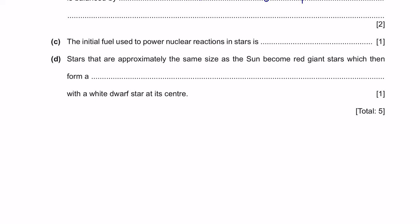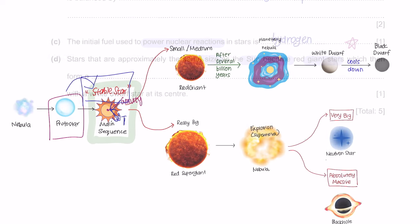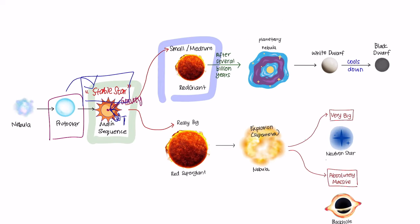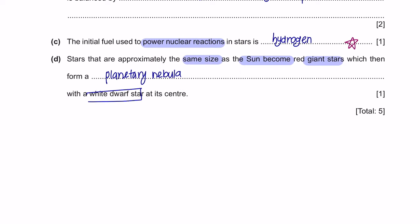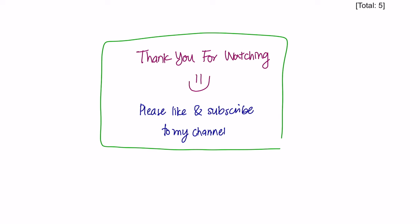Question C. The initial fuel used to power nuclear reactions in stars is hydrogen. Again, I've mentioned all of this in the video so you can watch that to understand further. And question D. Stars that are approximately the same size as the Sun become red giant stars which then form a... So, from red giant star, it will form a planetary nebula with a white dwarf star as its center.